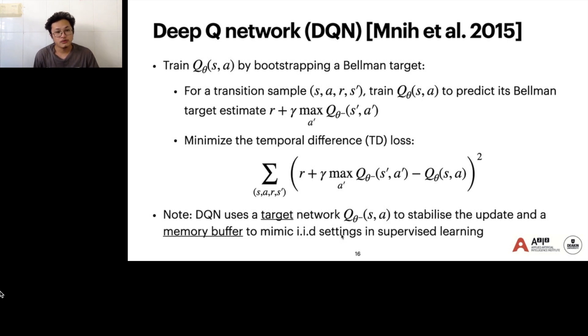A typical algorithm for deep reinforcement learning is deep Q-learning. It represents the value function by a deep neural network, and trains the Q function by bootstrapping the target. The loss function here is basically the temporal difference loss, the TD loss function. Then it has advances like target network to stabilize the update and memory buffer to mimic the i.i.d. setting.